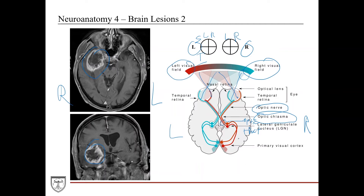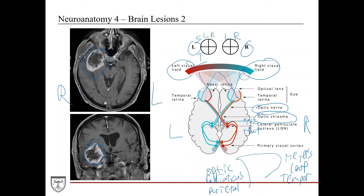After the LGN, the fibers split into two pathways: the optic radiations, which travel in the parietal lobe, and Meyer's loop, which travels at a roughly 90-degree angle in the temporal lobe. Meyer's loop carries inputs from the contralateral superior quadrants, while the optic radiations carry inputs from the contralateral inferior quadrants. Both pathways ultimately synapse in the primary visual cortex of the occipital lobe.